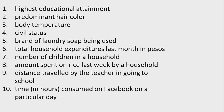Number one: highest educational attainment. Number two: predominant hair color. Number three: body temperature. Number four: civil status. Number five: brand of laundry soap being used. Number six: total household expenditures last month in pesos. Number seven: number of children in a household. Number eight: amount spent on rice last week by a household. Number nine: distance traveled by the teacher going to school. Number ten: time consumed on Facebook on a particular day.